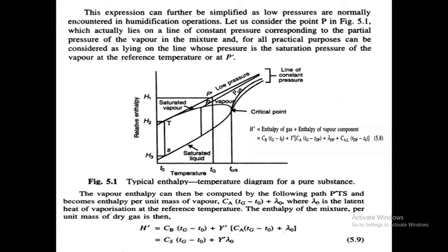Multiplying through: H' = (Tg - T0)(Cb + Y'·Ca) + Y'·λ0. Since Cb + Y'·Ca equals Cs, this simplifies to H' = Cs(Tg - T0) + Y'·λ0.